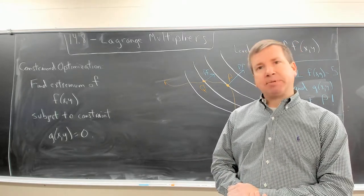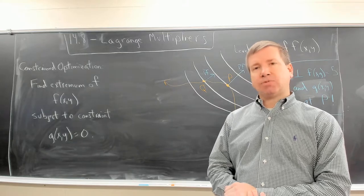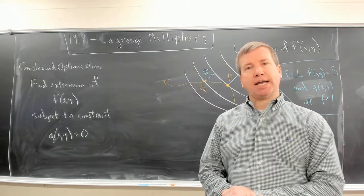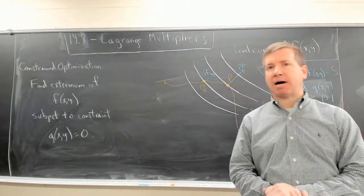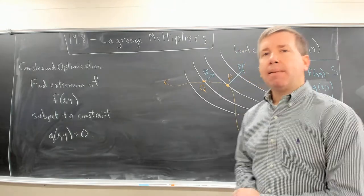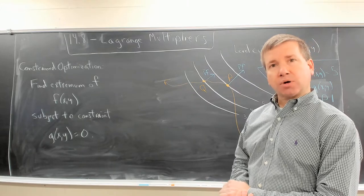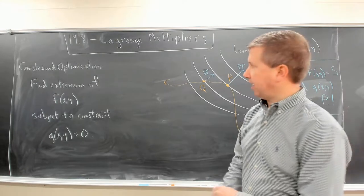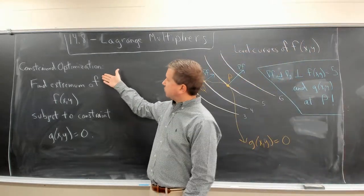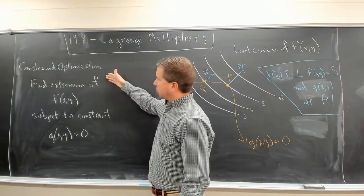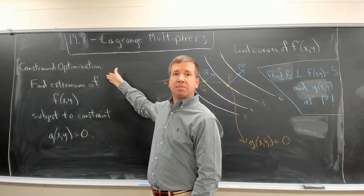A constrained optimization problem has restrictions on x and y. You are still trying to optimize f of x, y, but now this will be subject to some restrictions or constraints on x and y. So here is the standard example, a general form, of a constrained optimization problem.